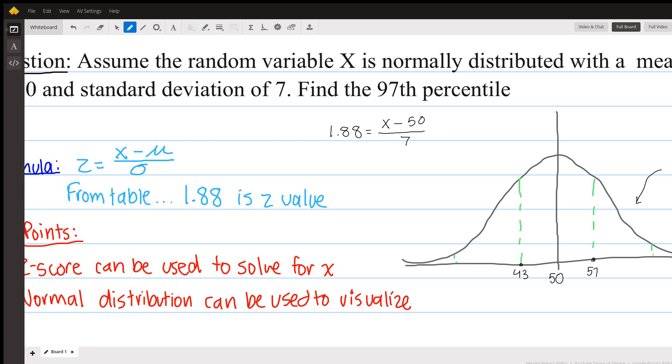So first we'll do 1.88 times 7, which is 13.16. And then to solve for x, we'll just add 50 to the other side, and then you get a final answer of 63.16.